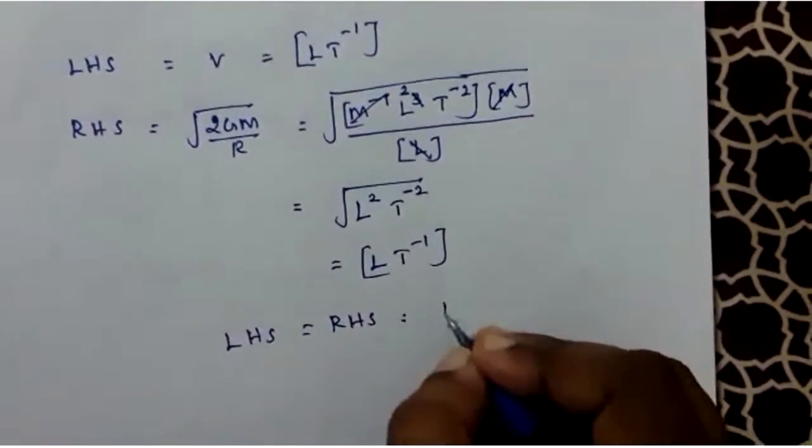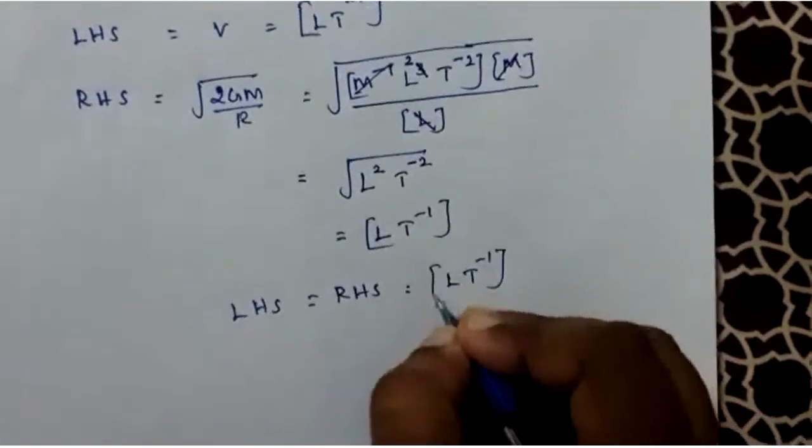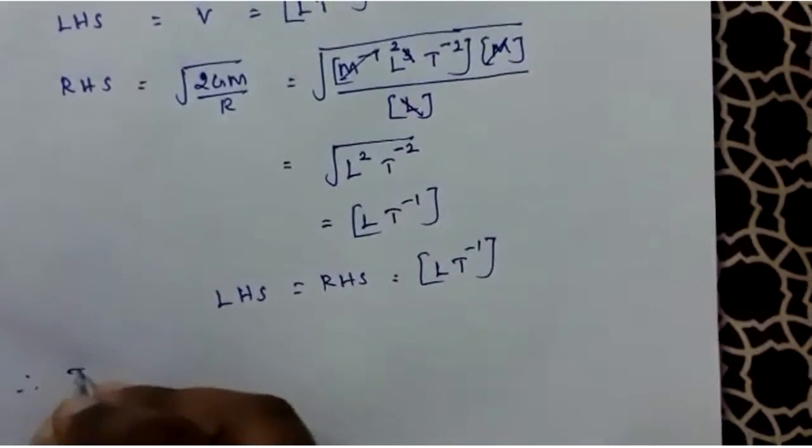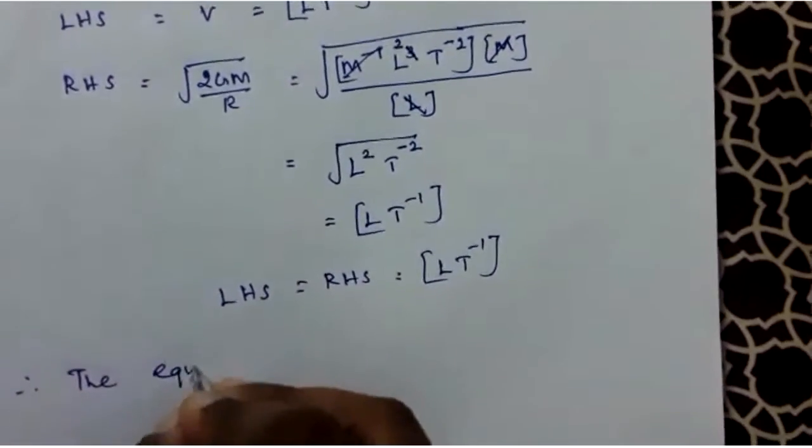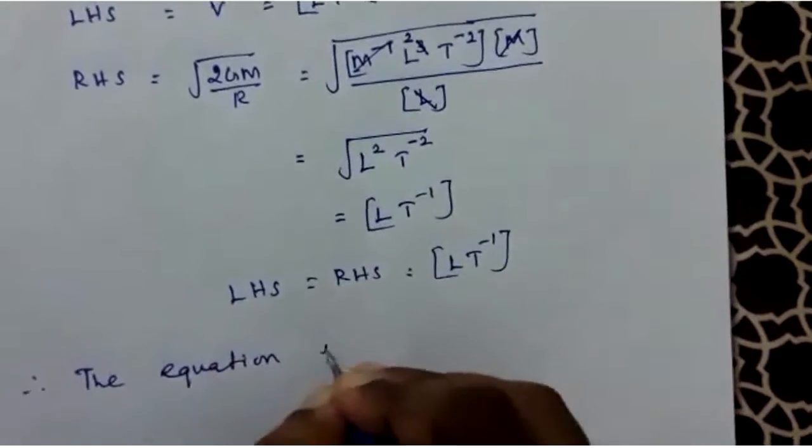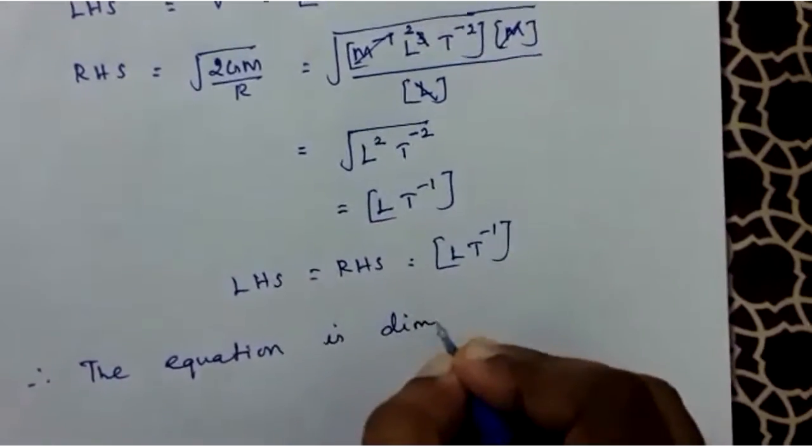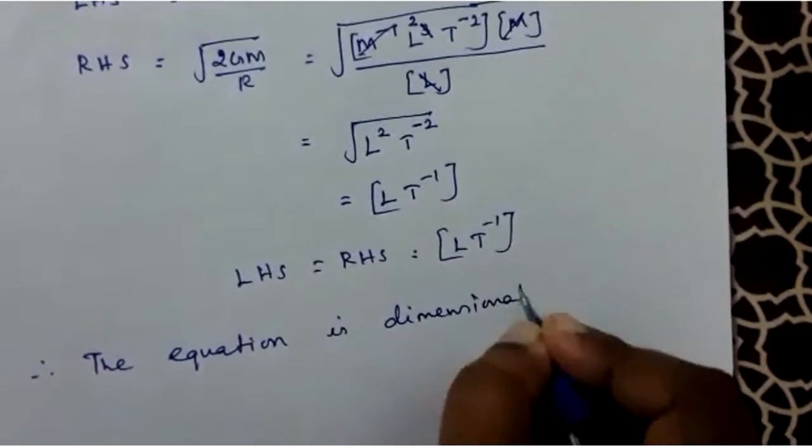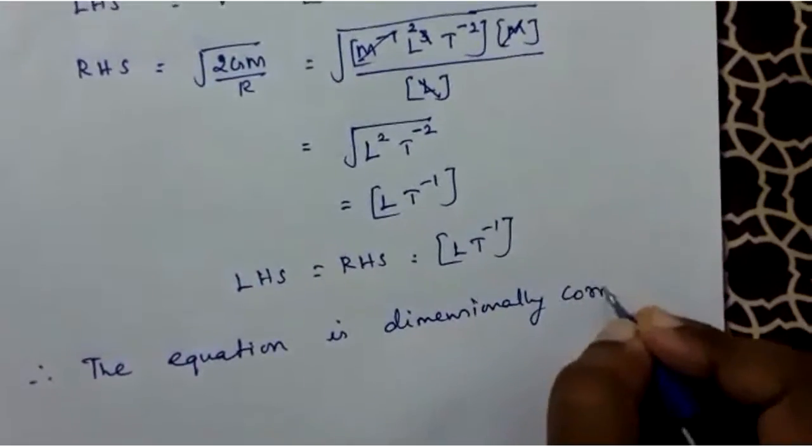Left-hand side equals right-hand side with the same dimension. Therefore, the equation is dimensionally correct.